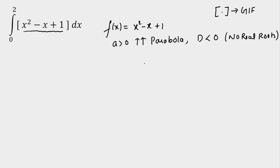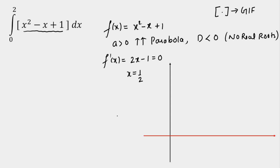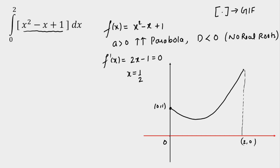It's an upward parabola, so a minima will appear at some point. Setting f'(x) = 2x minus 1 equal to 0, we get a minima at x equals one-half. Drawing the graph from 0 to 2: at x=0, the function value is 1. There's a minima at x=1/2, where the value is 1/4 minus 1/2 plus 1, which equals 3/4. The function then increases toward x=2.